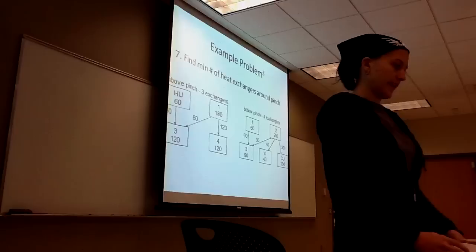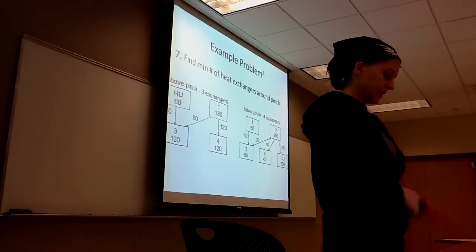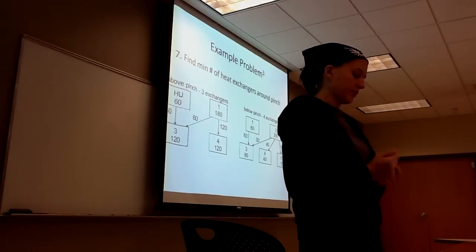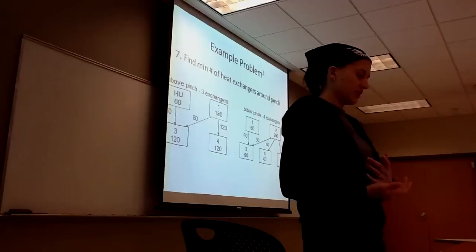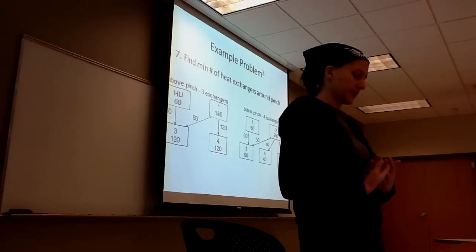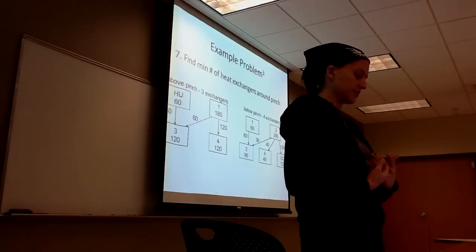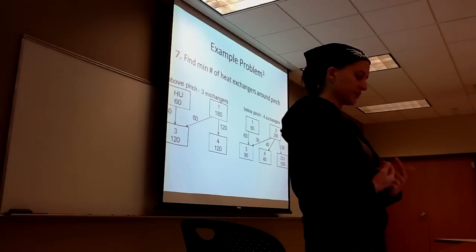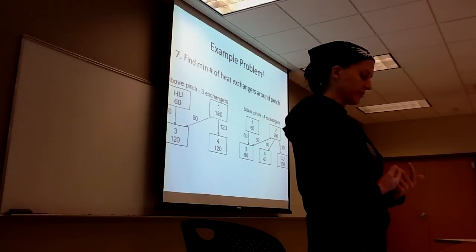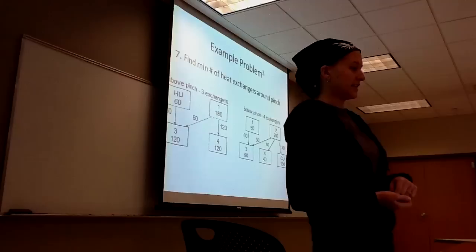Each arrow represents a heat exchanger. The total number of arrows is the total number of heat exchangers, but not necessarily the correct stream matches. The numbers in the boxes are the energy in the streams. Numbers with arrows are energy transferred in the heat exchanger.